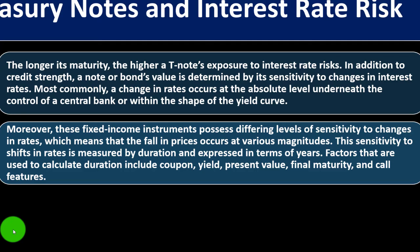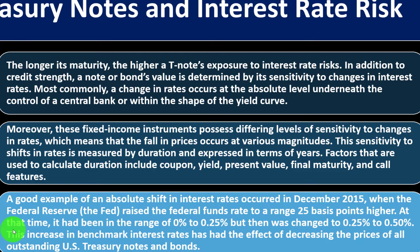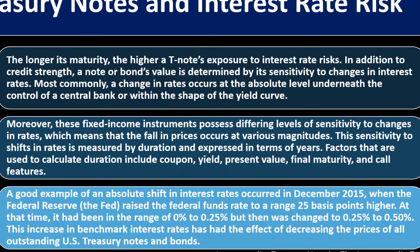Factors used to calculate duration include coupon, yield, present value, final maturity, and call features. A good example of an absolute shift in interest rates occurred in December 2015 when the Federal Reserve raised the federal funds rate by 25 basis points — from a range of 0% to 0.25%, to 0.25% to 0.5%. This increase in benchmark interest rates decreased the prices of all outstanding U.S. Treasury notes and bonds.